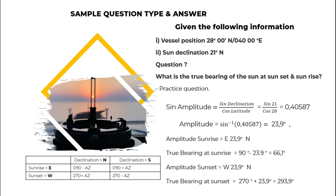The amplitude equals inverse sine of 0.40587, which gives us 23.9°. The amplitude at sunrise is N 23.9° — labeled North due to sunrise, and North because it matches the declination's name. From the azimuth table, when the label is North, the true bearing at sunrise equals 090° minus the azimuth: 090° minus 23.9° equals 66.1°.